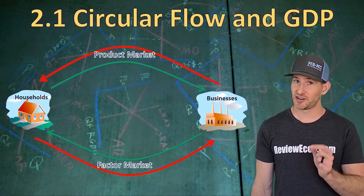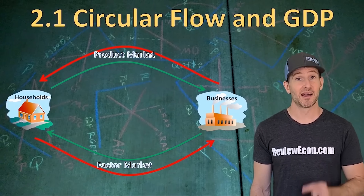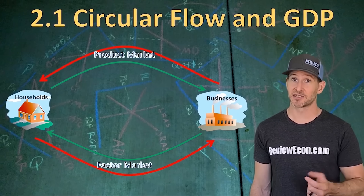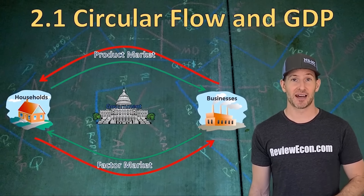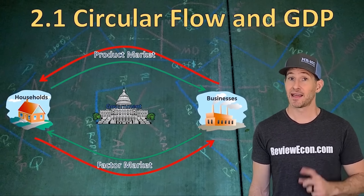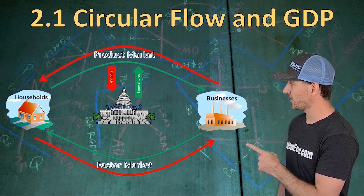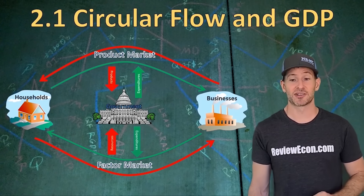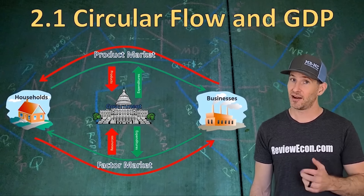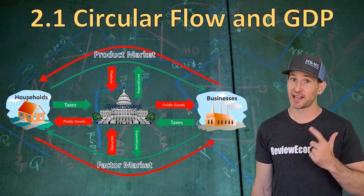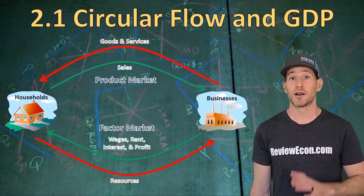Of course, in the United States, we do not have a purely free market economy. We have a mixed economy called capitalism or free enterprise. We have the government as a third economic actor. They get goods and services from the product market and resources from the factor market. They also provide public goods to households and businesses and pay for them through taxes.